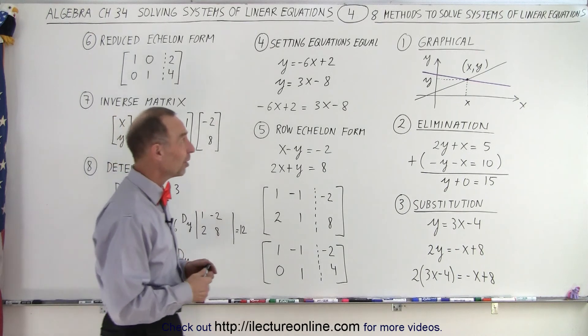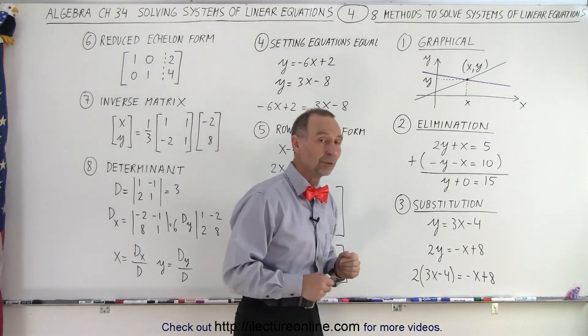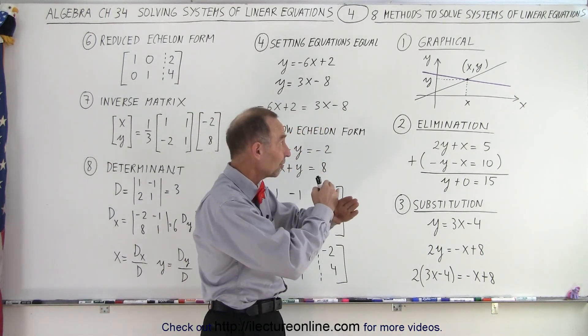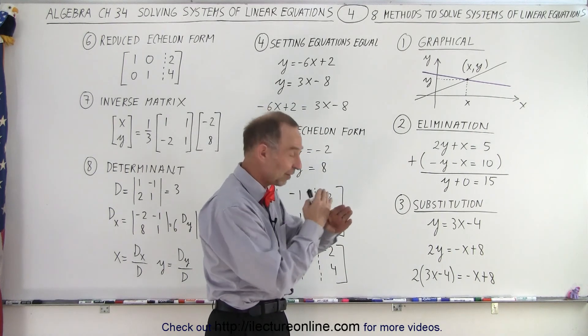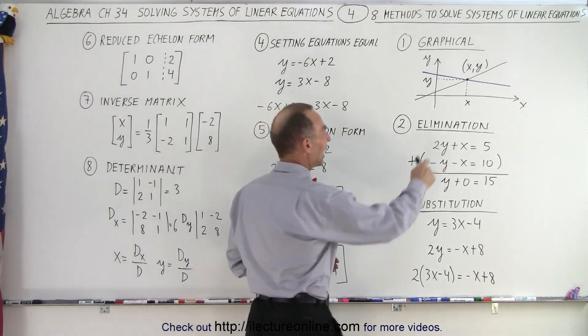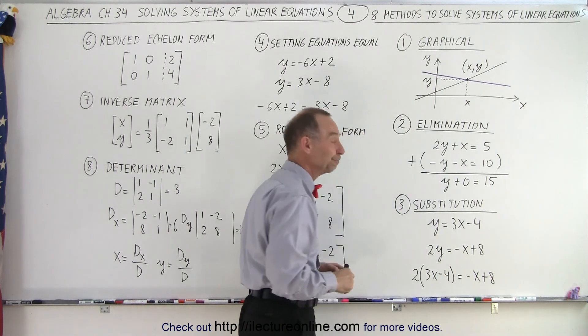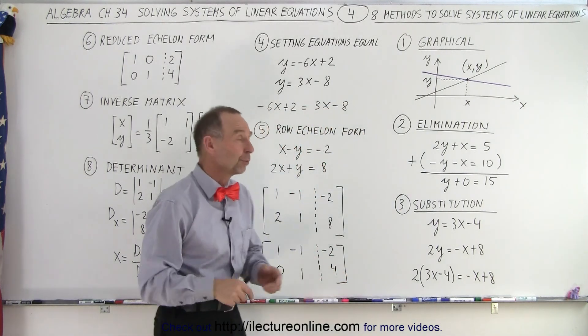So what are those eight methods? First of all, we can have the graphical method. In other words, we simply graph the two lines on the x-y axis and we figure out where the two lines cross and we find out what the x and y coordinates are of that. So that's a fairly straightforward way to do so.